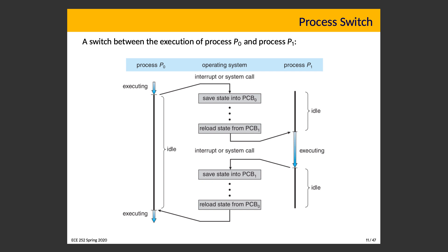Here is a sequence showing that process P0 is executing at the beginning. There will be an interrupt or system call, and we save the state for this process into its process control block. The operating system does whatever it needs to do — carrying out a system call, or the scheduler running and deciding that PCB 1 is going to execute. It reloads the state from process control block 1 and restarts process P1. P1 executes until it hits an interrupt — maybe a timer interrupt indicating its time slice has expired — and we save the state again. The operating system then reloads the state from process control block 0 and execution resumes on P0.